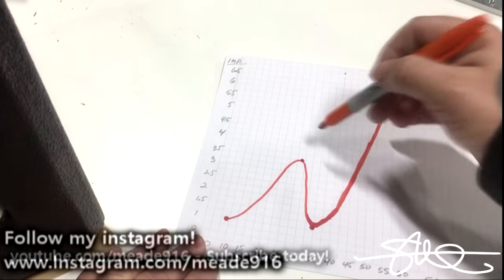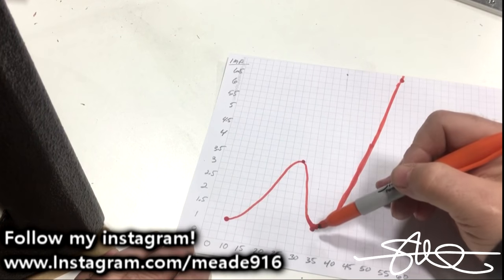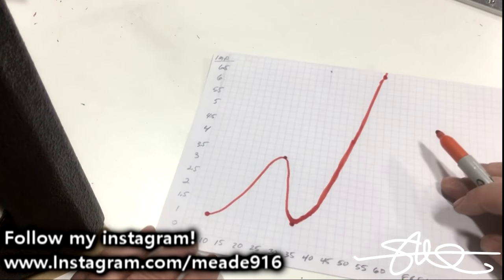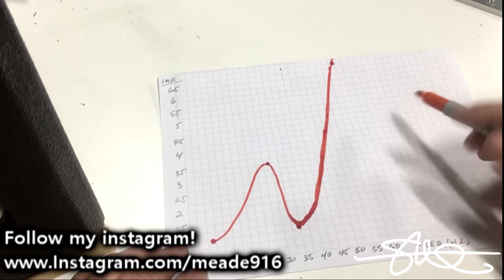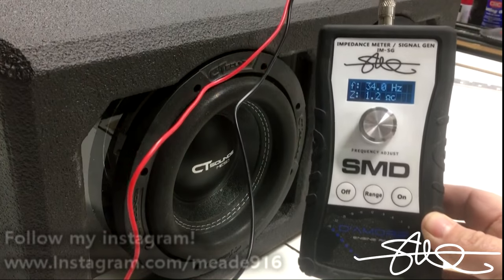You really don't need all this anyways. This is what you're looking for. This bottom dip, your first dip is your number. So 34Hz is pretty much what this thing was showing, and then it goes through the roof after that. So this box is tuned to 34Hz. Exactly what I thought it would be.